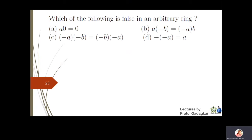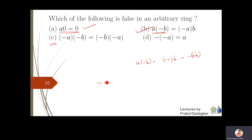Next question: which of the following is FALSE in any ring? The property a·0 = 0 is always correct. By theorem, a·(−b) = (−a)·b = −(ab), so that is also correct. Now consider part (c): (−a)·(−b) = (−b)·(−a). Is this true in any ring?